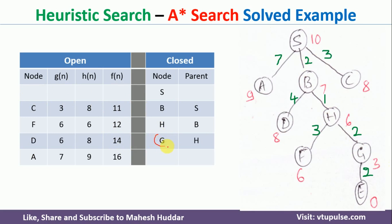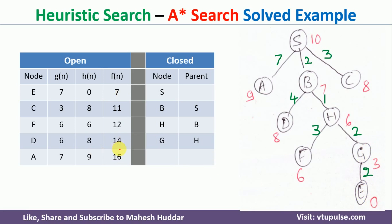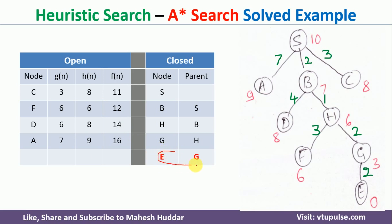We check whether G is a goal — it is not. Exploring G, we have one option: E. f(E): g(E) = g(G) + 2 = 7, h(E) = 0, so f(E) = 7. Sorting, E is first on open. We bring E to the closed list and check whether E is a goal — yes, E is the goal node. So we mark this path as the final solution.